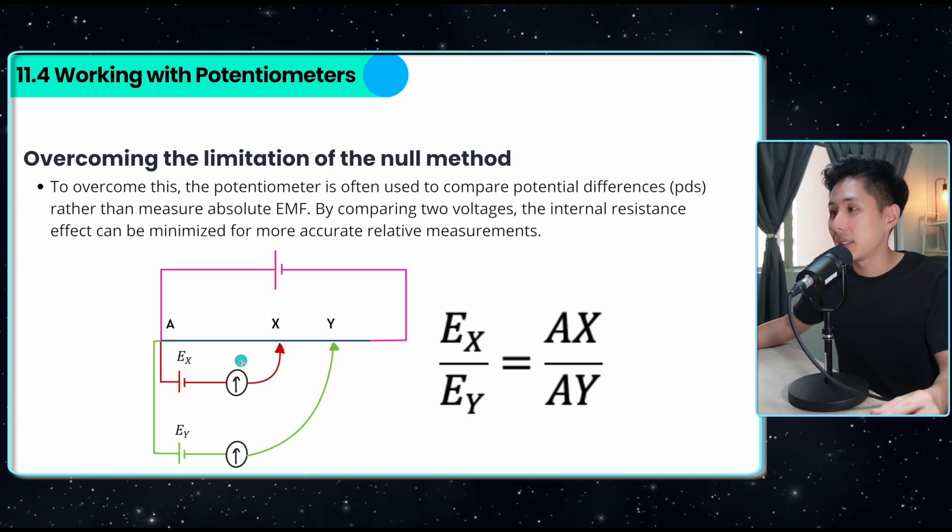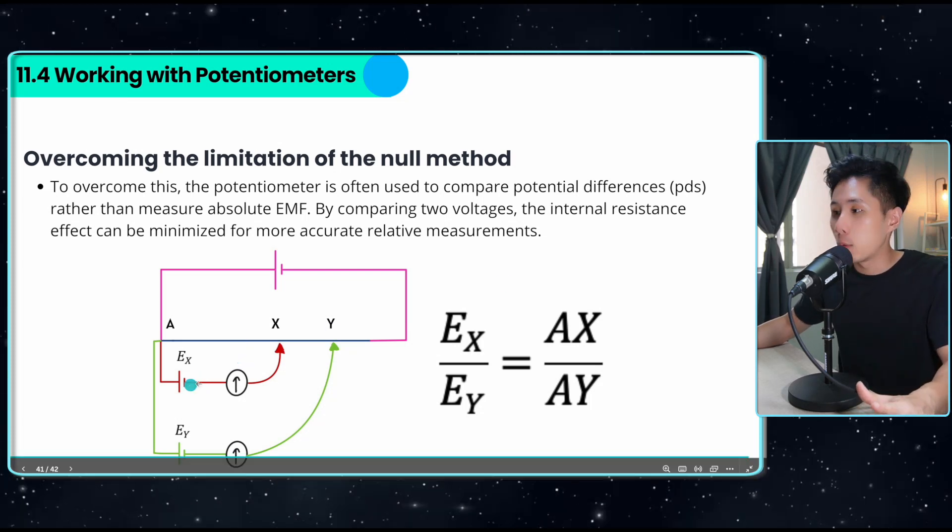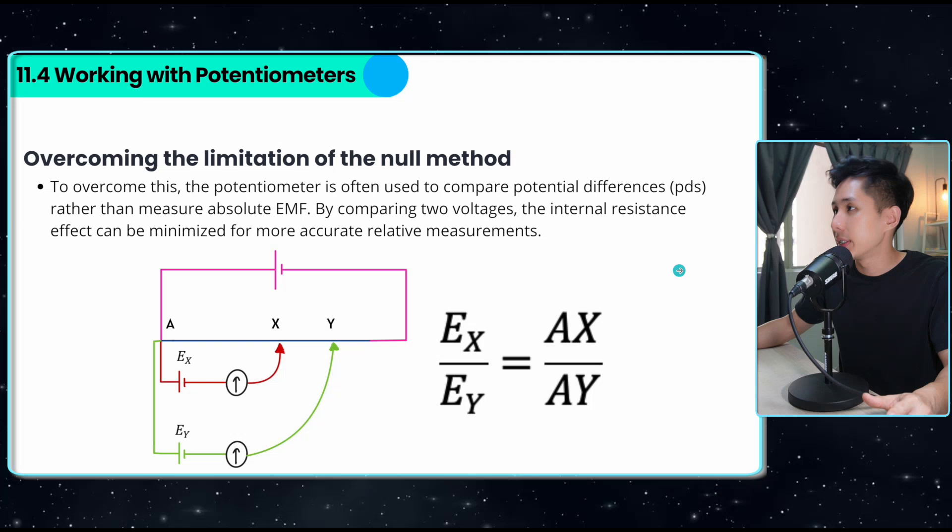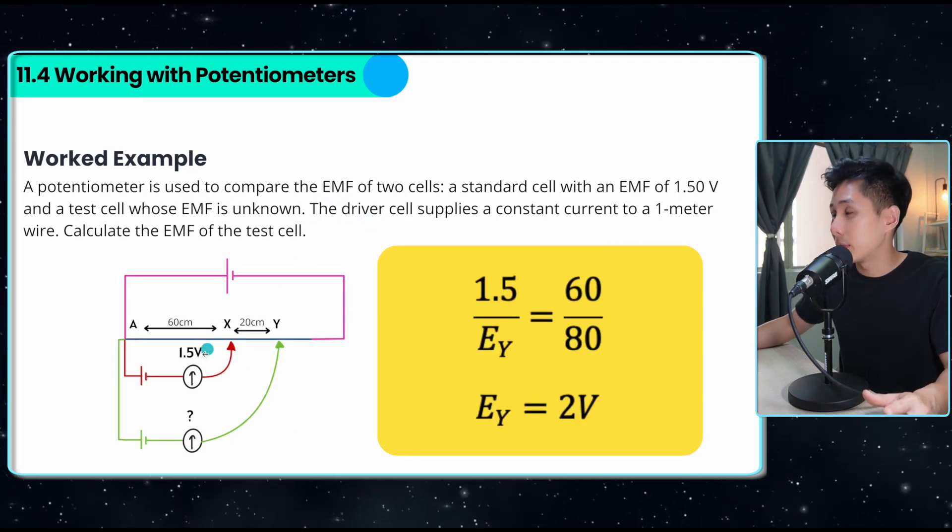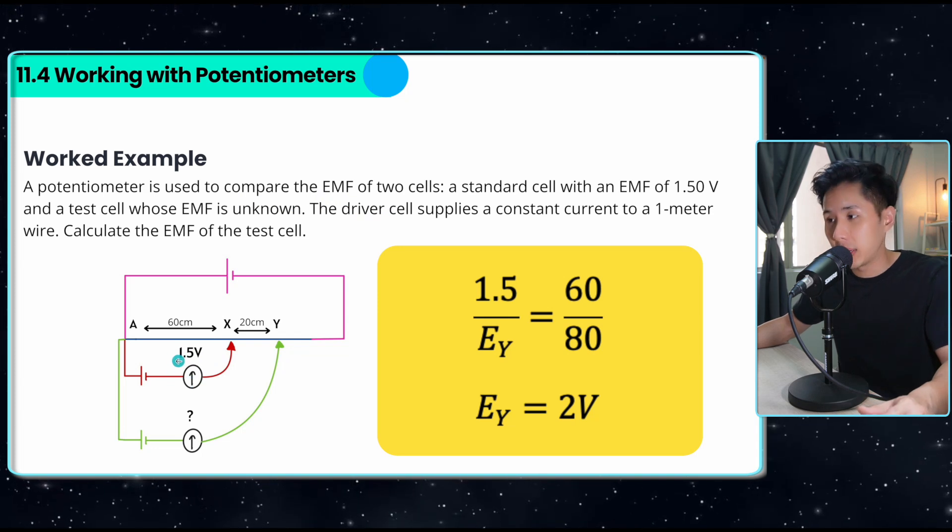Instead of putting one test cell, the solution is to put two test cells with the value of one of the test cells known. So let me give you an example. To compare the EMF of two cells, let's say the EMF here is known. I want to calculate this.